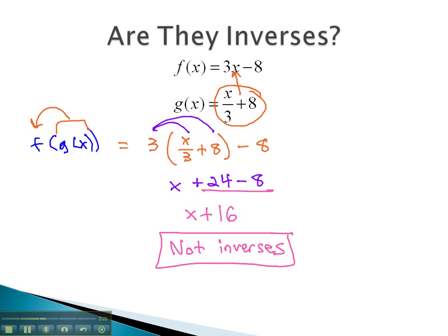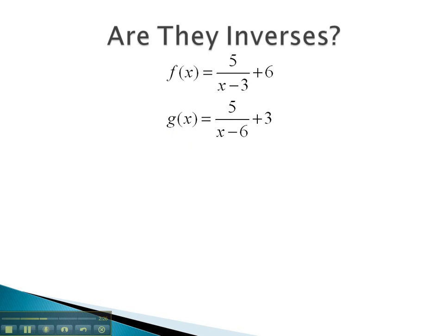Let's take a look at another example where we have to calculate f(g(x)) and g(f(x)) to see if they're inverses. Let's start by finding f(g(x)). This means we take g and plug it into the f function. The entire g going in for x will give us 5 over x, which is now 5/(x - 6), plus 3, and then we subtract 3 and add 6 to the whole thing.